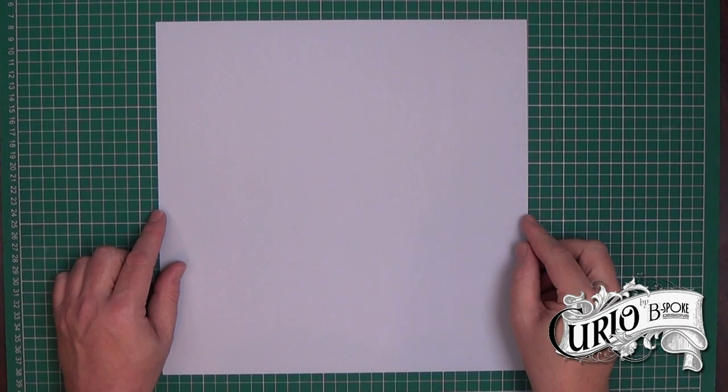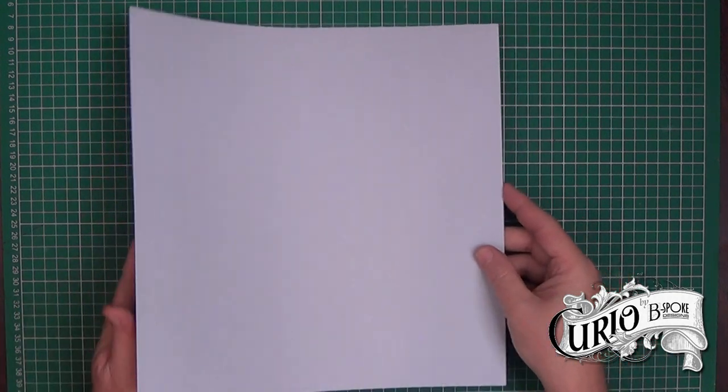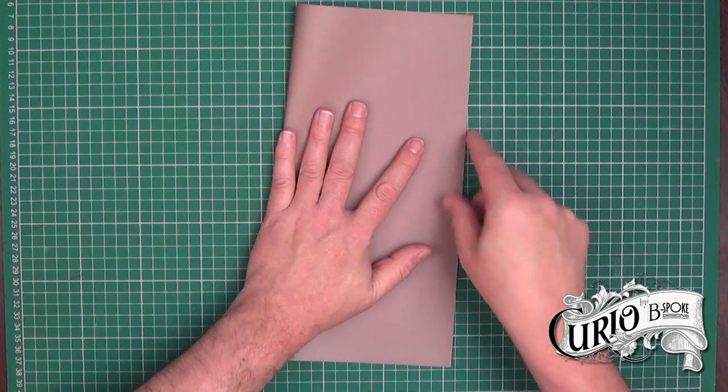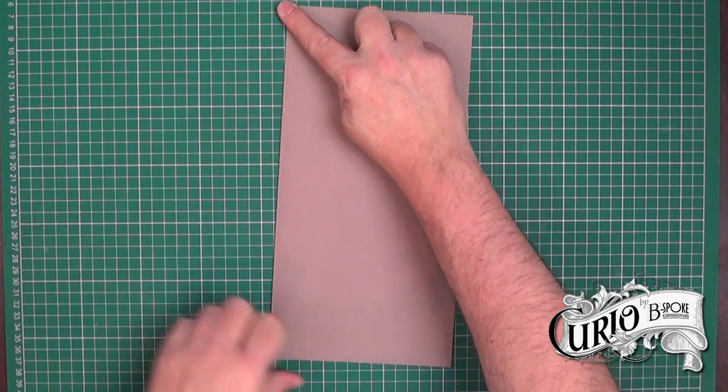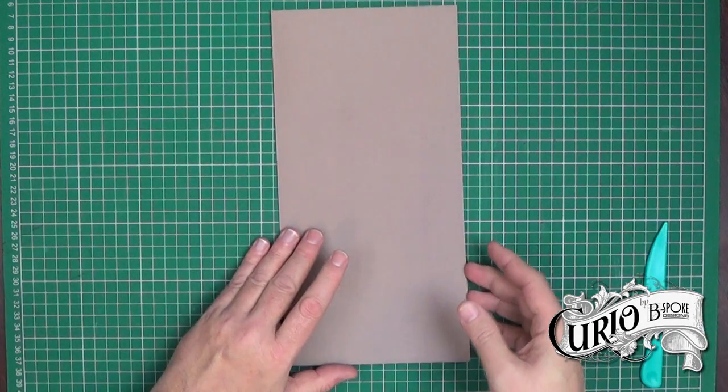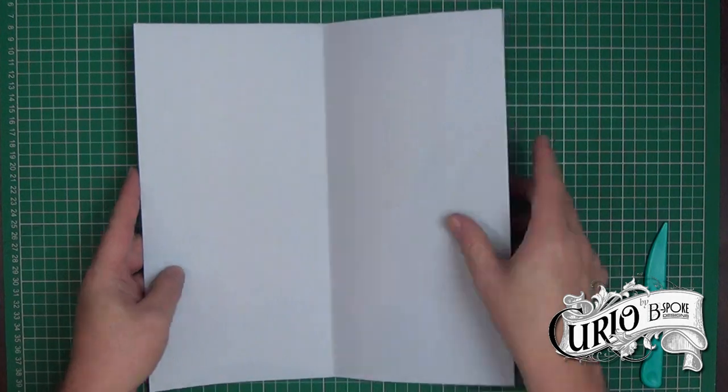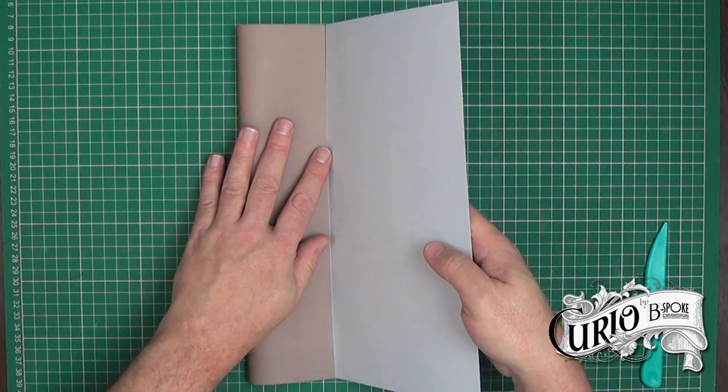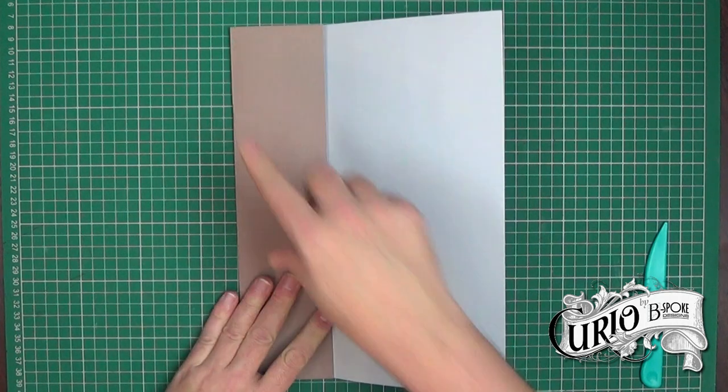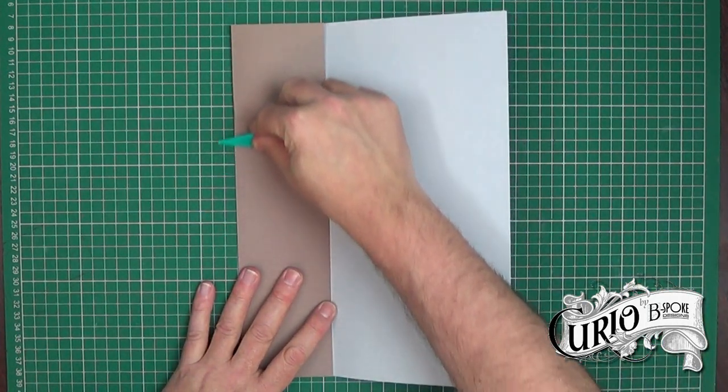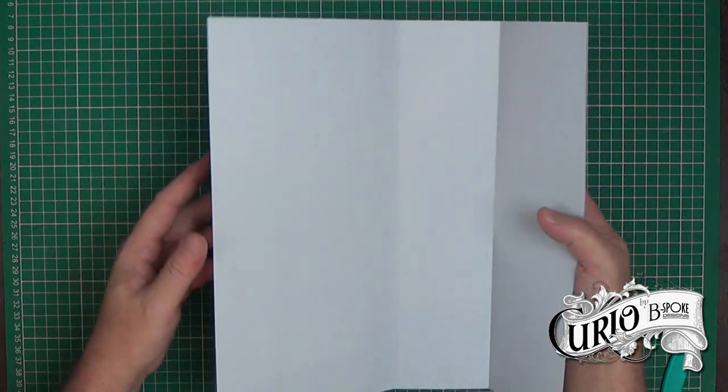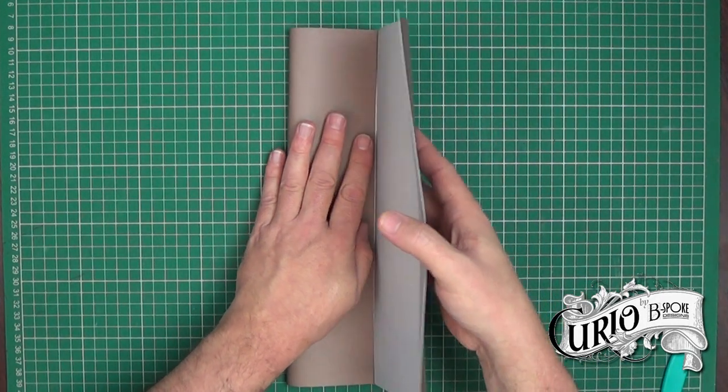So we're going to start with a single piece of 12 by 12 cardstock and we're just going to fold it in half across the centre, making sure that the folds are accurate. I'm just going to reinforce the fold with a bone folder. Then I'm opening it up again and I'm taking the outside to the middle and making another fold. Now of course you can use a scoring board for this if you wish. I find they're not quite as accurate as the paper's never really cut to 12 by 12 exactly. And I find this way you end up with more equal folds.